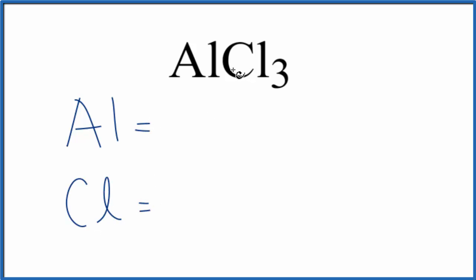For the aluminum, there's no subscript written after it, so we're going to assume that is one. We have one aluminum atom. Chlorine has a subscript of three, so three chlorine atoms.